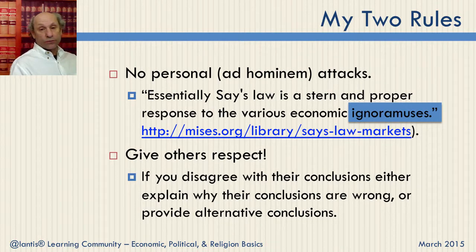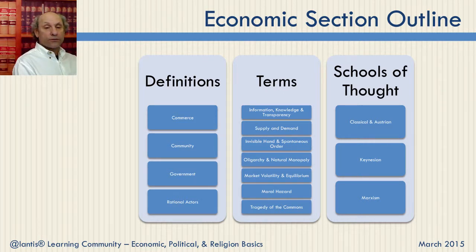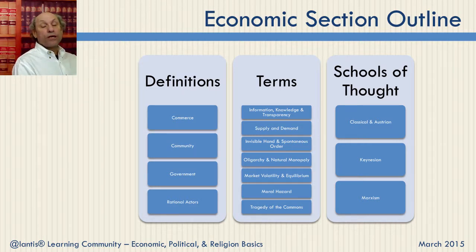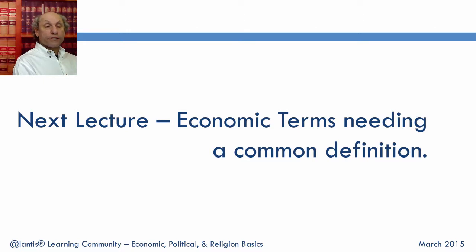The way I've divided this class is into three broad categories. First, I'll talk about definitions — what is commerce, what is the community, what is government, what are rational actors. Then I'll go into specific terms and details like supply and demand. I'm going to spend a lot of time on information and transparency, on the invisible hand, and on natural monopoly since that's key in telecommunications. Finally, I'll end with a discussion of the schools of thought — I've listed three, but I might add more by the end. The next series of lectures will cover the economic terms that need definitions.